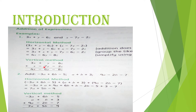Doosri mein minus 7y aur plus y — dono terms ka sign different hai, jo badi term hai uska sign lena hai: minus. 7 mein se 1 nikaalen — minus 6y. Teesri mein dono sign same hain — minus 6z aur minus 2z milake minus 8z.